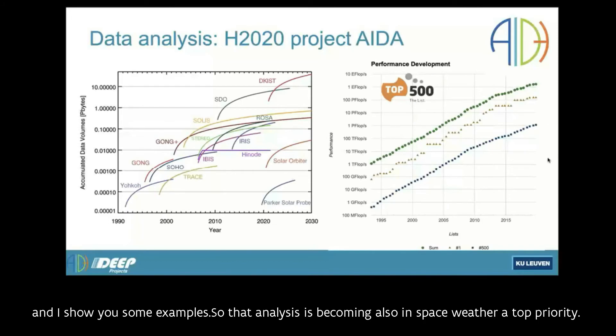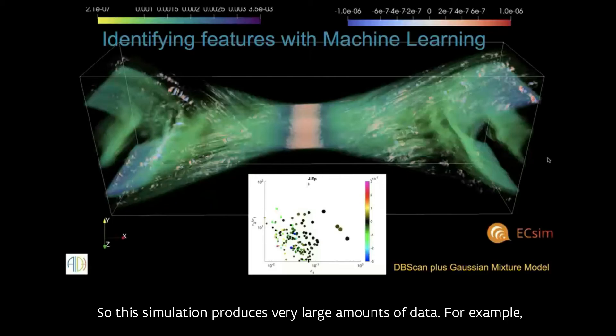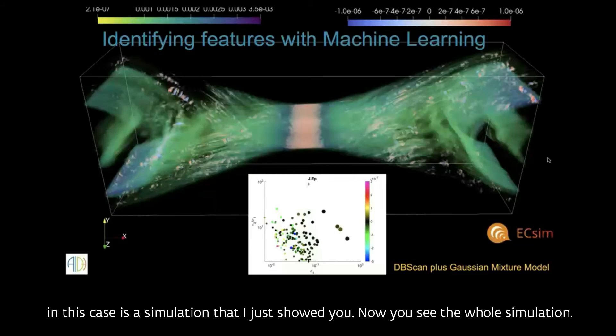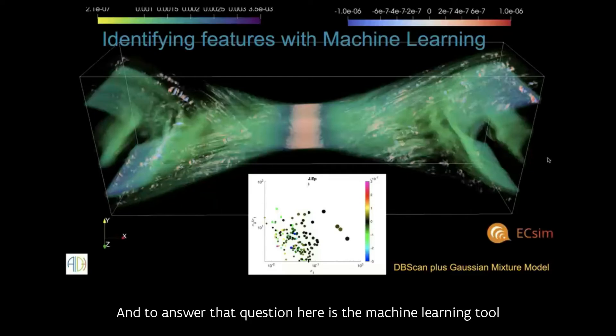This analysis can be done using GPUs. That analysis is becoming also in space weather a top priority because there are these tremendously large simulations that produce a tremendous amount of information, but also the space missions are generating bigger and bigger data because they have more resolution and are producing more data. Ground-based observations or also in-situ space observations. So this is an example of what you can do with data analysis using machine learning.